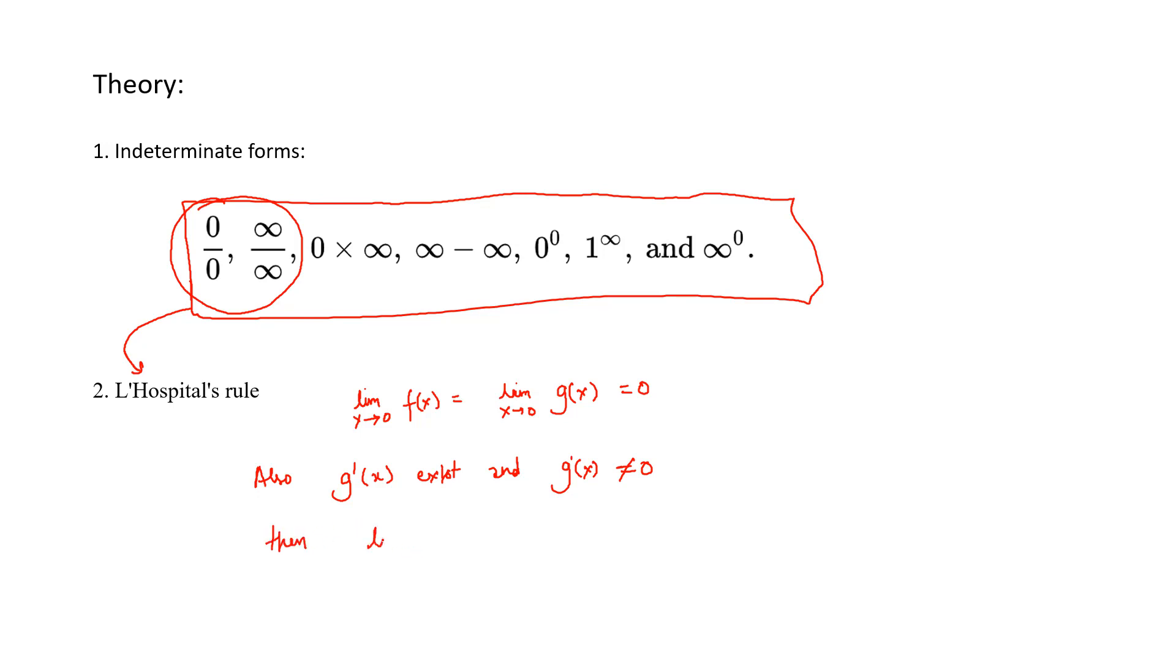The limit x tending to zero of f of x over g of x equals the limit x tending to zero of f prime of x over g prime of x. So when you have a 0/0 or infinity/infinity form, the limit of f(x)/g(x) becomes the limit of f'(x)/g'(x).